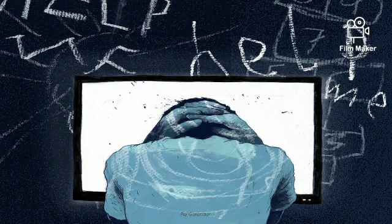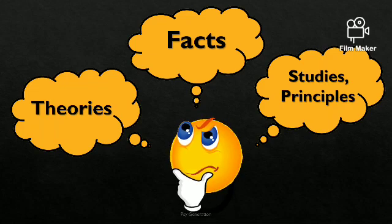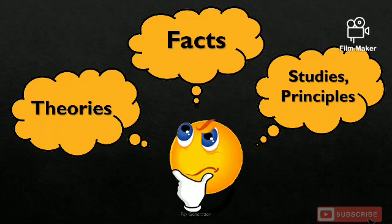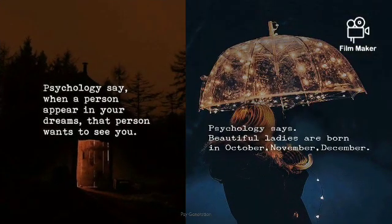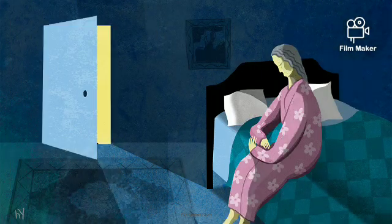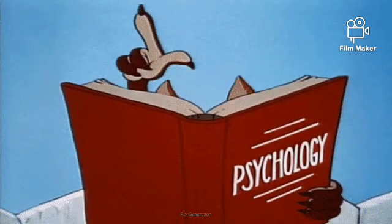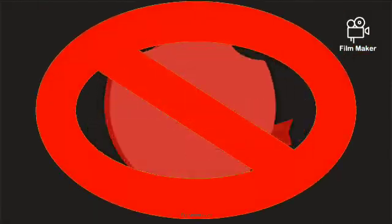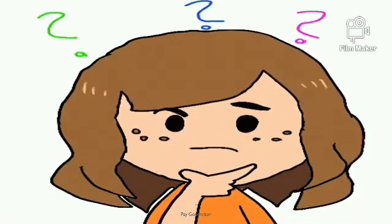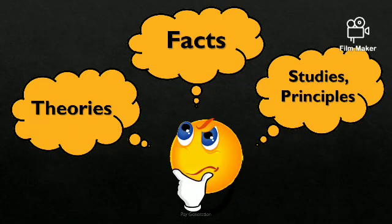Aksar log psychology ke naam par koi bhi studies, facts, and theories ko propose kar deti hain, jabki wo theories, facts, and principles kahi se bhi psychology se related nahi hote hain. For example, aksar aapne social media pe dekha hoga — 'psychology says' honoo vijyana kaata hai — is tarah se aapke saamne posts aate hain, theories propose ki jati hain, jabki in so-called theories ke baare mein manovijyan ka kuch bhi nahin hota. Wo saari chizein fake hoti hain aur kahi se bhi psychology se related nahi hoti hain.